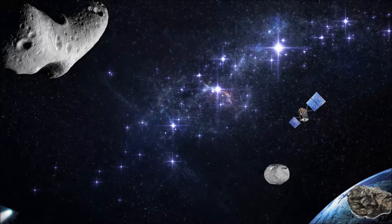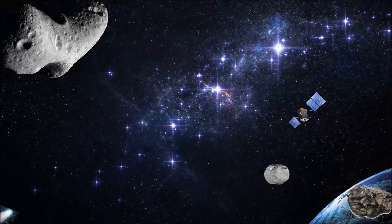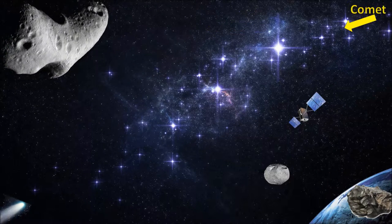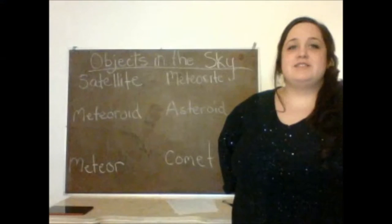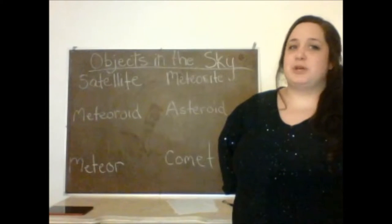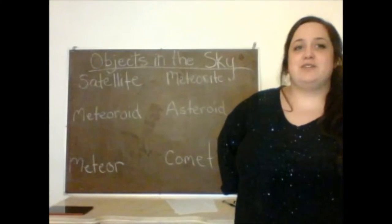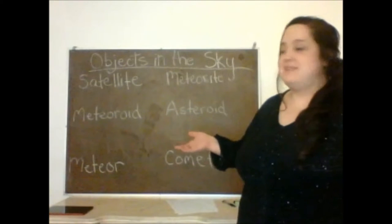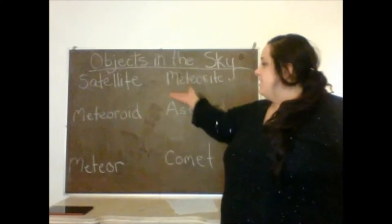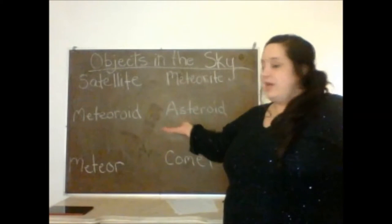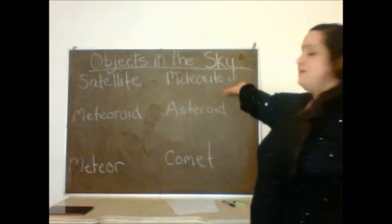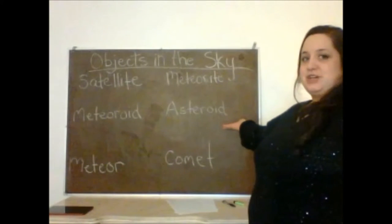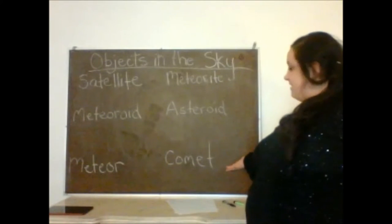A larger form of a meteoroid is an asteroid. And then there is the comet. So now that you know what we're going to be learning about, let's take a closer look at each of these objects: the satellite, the meteoroid, the meteor, the meteorite, the asteroid, and the comet.